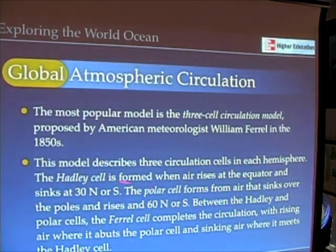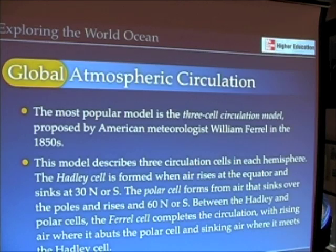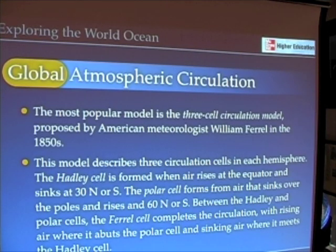At the equator, we have something called the Hadley cell. Air rises at the equator and sinks at about 30 degrees north. This has enormous consequences — sinking air leads to the formation of subtropical deserts. It's named after the guy who discovered it, Mr. Hadley. The polar cell, at the other end, forms as air sinks over the poles.